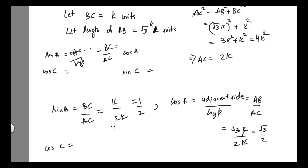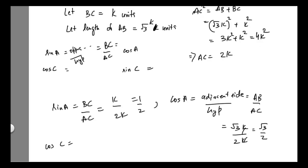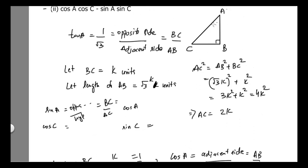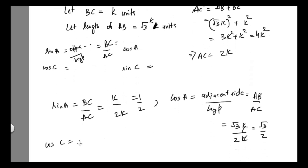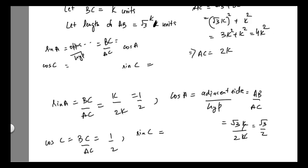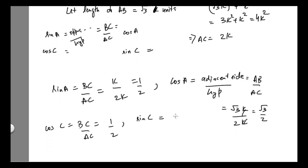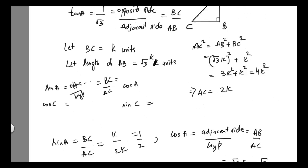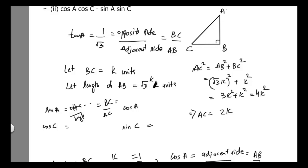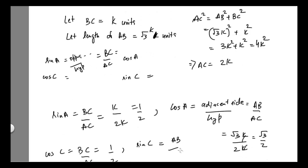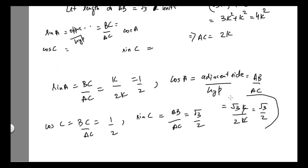For cos C, adjacent side to angle C is BC and hypotenuse is AC, so cos C equals BC divided by AC, which equals 1 by 2. For sin C, opposite side to angle C is AB and hypotenuse is AC, so sin C equals AB divided by AC, which equals √3K divided by 2K, giving √3 by 2.